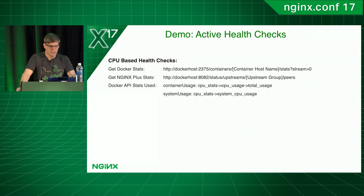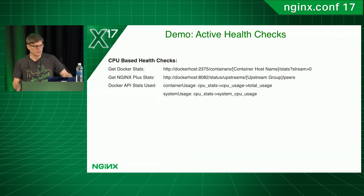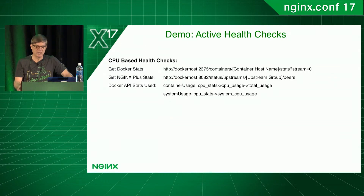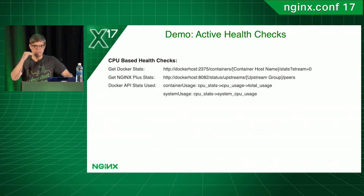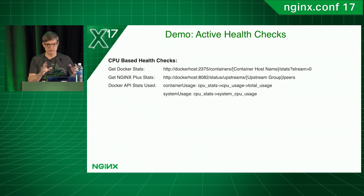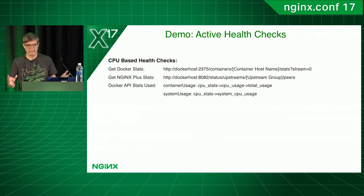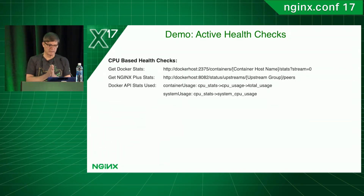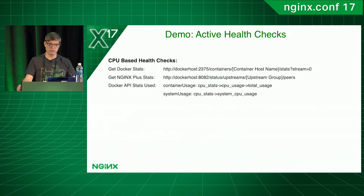The CPU check is a little more complicated. If you run 'top' inside a Docker container, you'll find you're seeing the Docker host — all five containers will show the same thing. But the Docker API does allow you to get per-container stats. The container calls the host on the Docker API and gathers statistics about that container's usage of the Docker host. I have to make two API calls one second apart to calculate the CPU utilization.